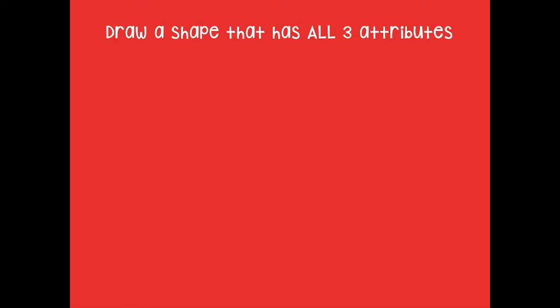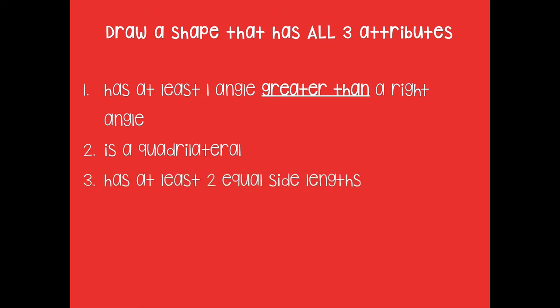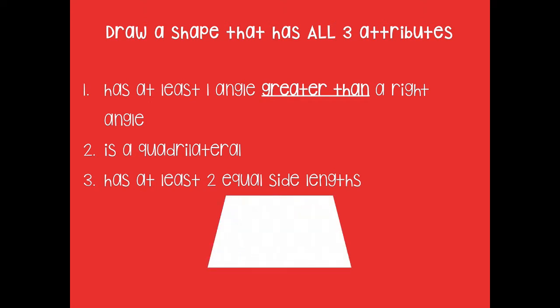Let's play together. Draw a shape with all three attributes: has at least one angle greater than a right angle, is a quadrilateral, and has at least two equal side lengths. Pause the video and draw your shape. Here's what I drew — a trapezoid. It has an angle that is greater than a right angle, and it has at least two equal side lengths.